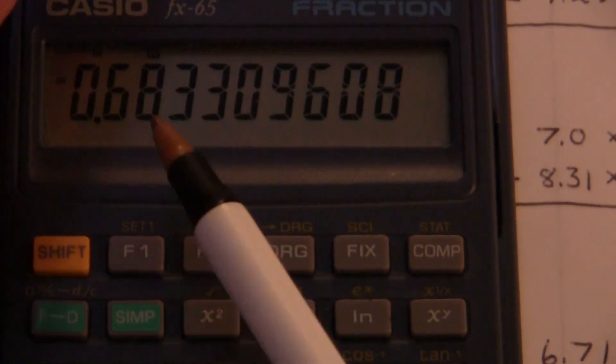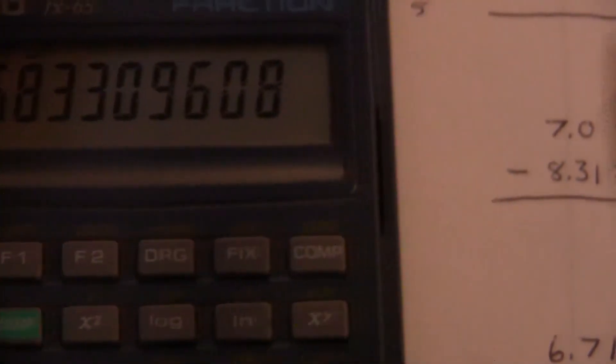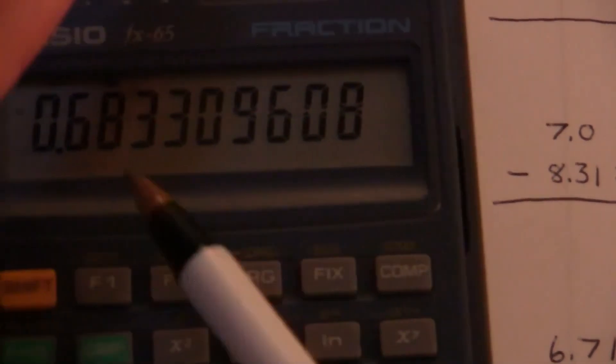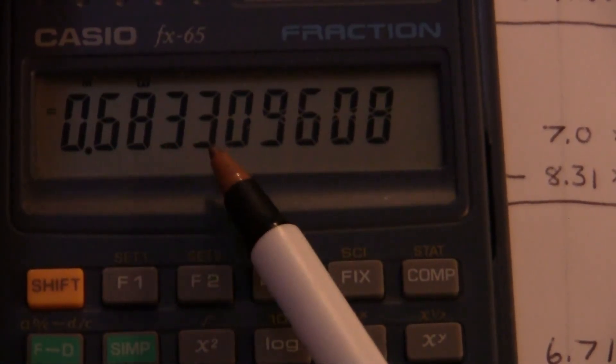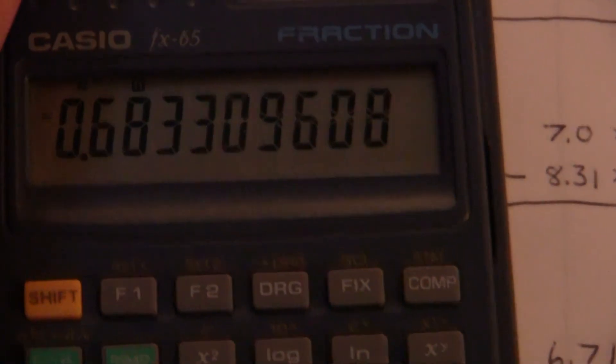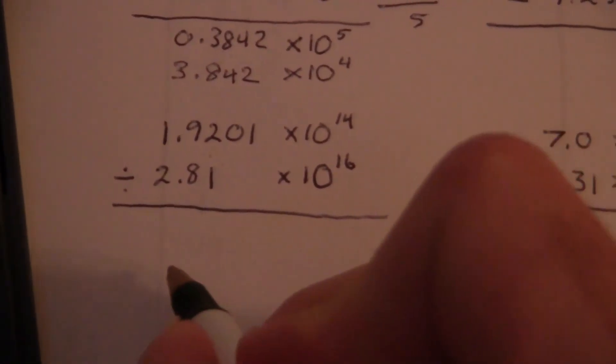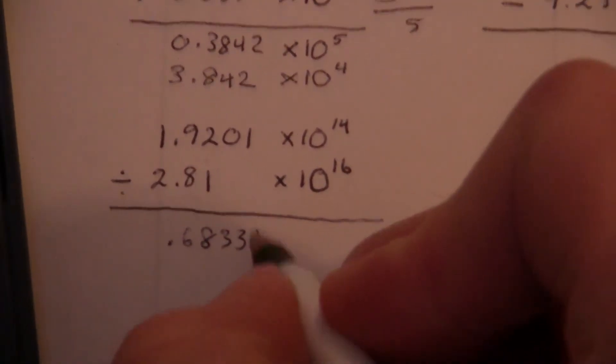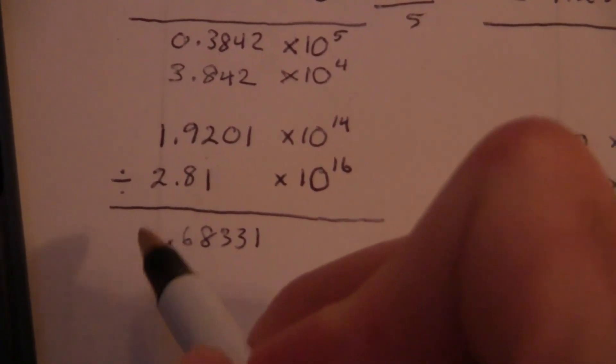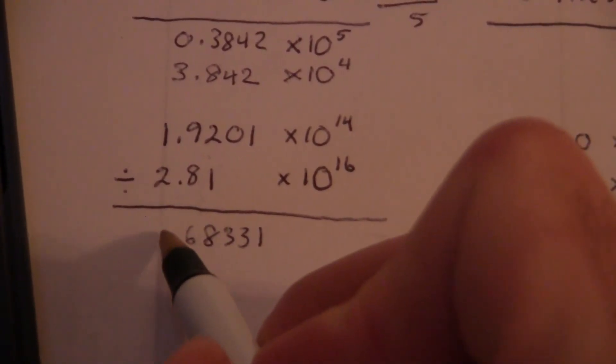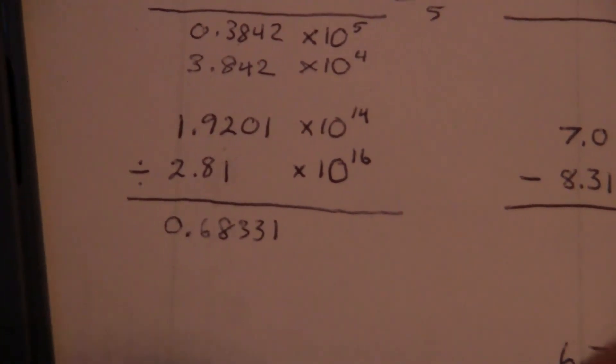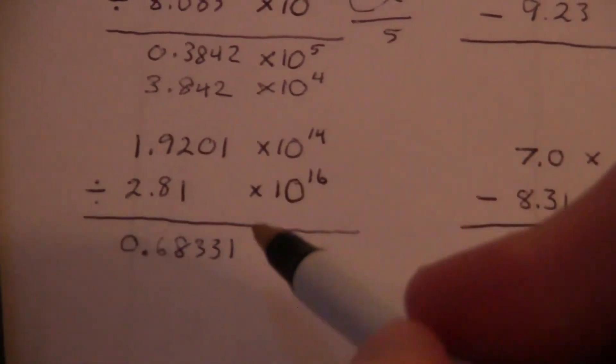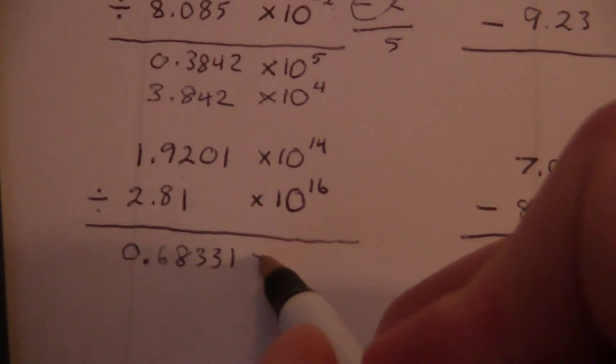Equals 0.683309608. Or, why don't we just keep five digits of that? 0.6833, and then this becomes 1. 0.68331. You'll notice, again, when we have those leading zeros, we don't care about those. Those are just to tell us there's a decimal point there. So we're done with the first part there.